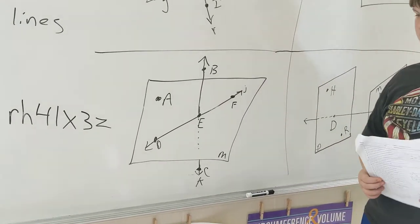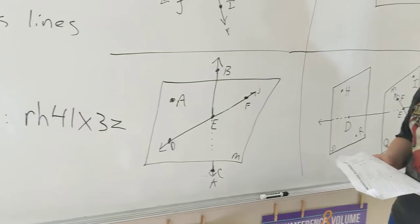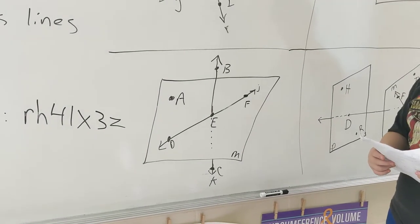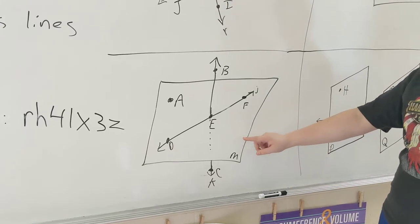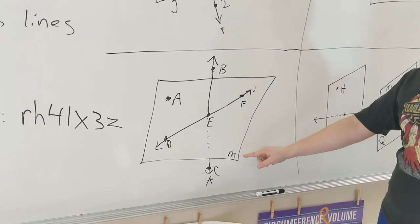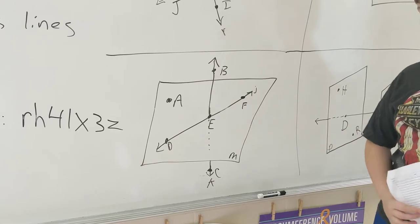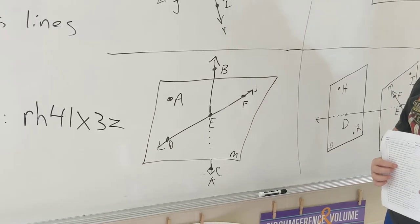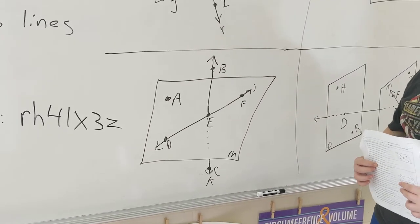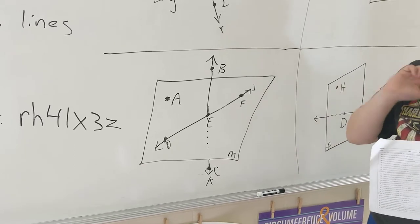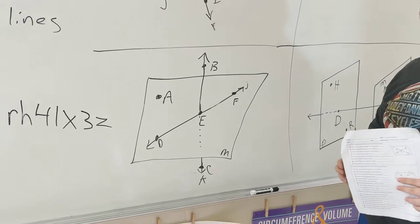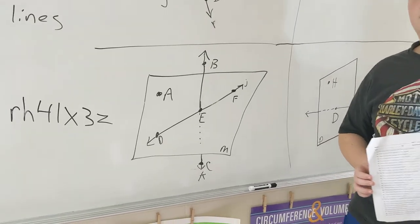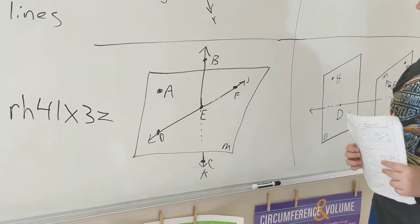Can you name a plane containing point A? That would be plane M. Plane M is correct. And what would be another way we could name this plane? Plane DFA. DFA. Very good. And those were not collinear. So that works good for a plane. Very good.